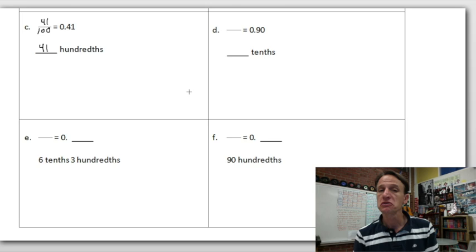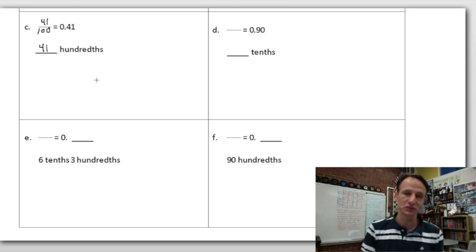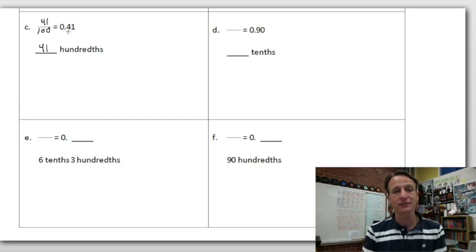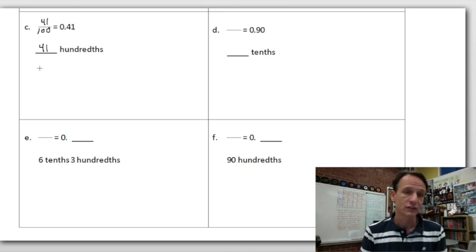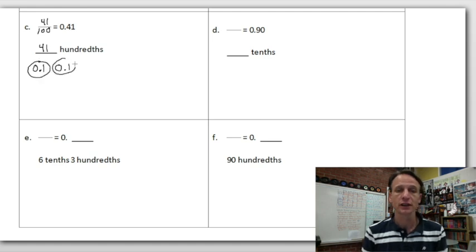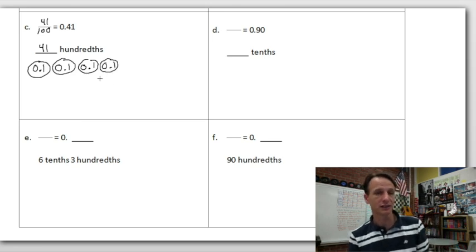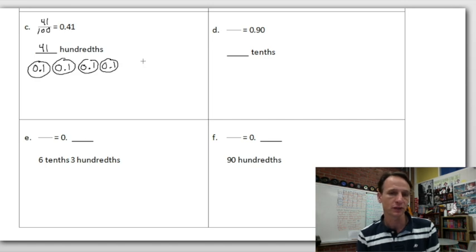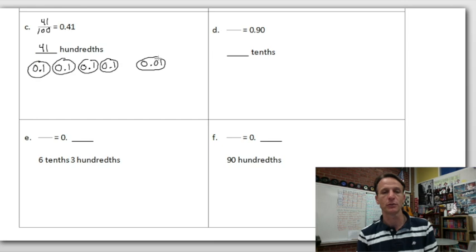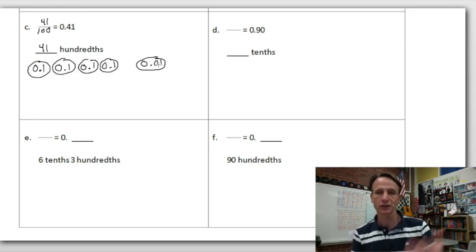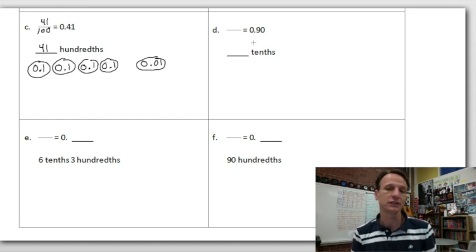So here's four tenths, and one hundredth. Instead of taking five minutes to draw 41 individual hundredths, draw four dimes and a penny — four tenths, one hundredth, done! And especially for 0.90, there's no way I'm drawing 90 pennies. That's 90 hundredths — in fraction form 90 over 100 — but what's in the tenths place? Nine. So it's nine tenths.